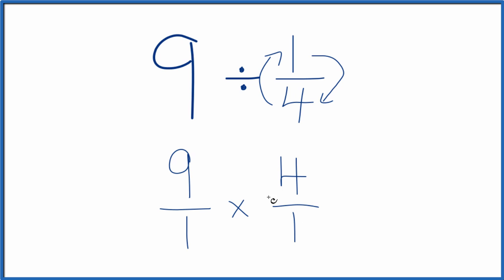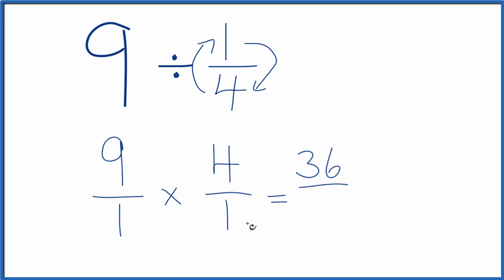So now when we multiply fractions, we multiply the numerators and then the denominators. So 9 times 4 is 36. 1 times 1, that's 1. And 36 divided by 1, that's 36.